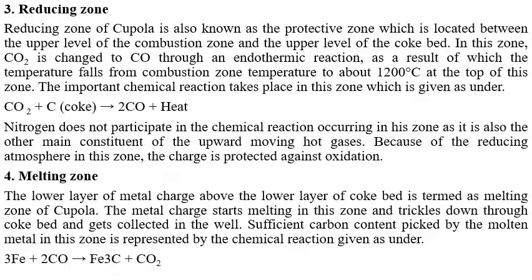In the reducing zone, carbon dioxide is changed to CO through an endothermic reaction. As a result, the temperature drops to about 1200°C at the top of this zone. The key chemical reaction is: CO₂ + C (coke) → 2CO + heat. Nitrogen does not participate in the chemical reactions but is a main constituent of the upward-moving hot gases. The reducing atmosphere protects the charge against oxidation.